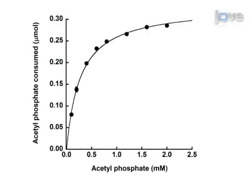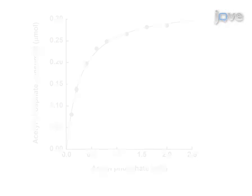Based on the amount of acetyl phosphate substrate consumed in the reaction, results allow for determination of enzyme kinetic parameters. The advantage of this technique over existing methods is based on the direct measurement of acetyl phosphate consumption rather than the coupling of ATP production to the reduction of NADP.